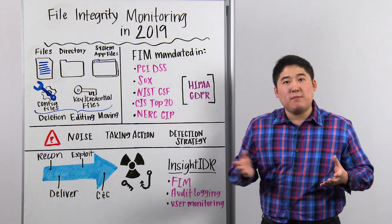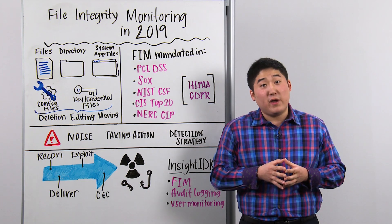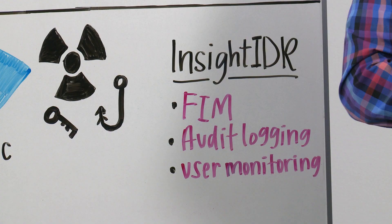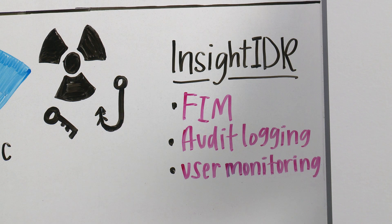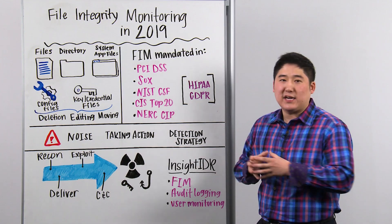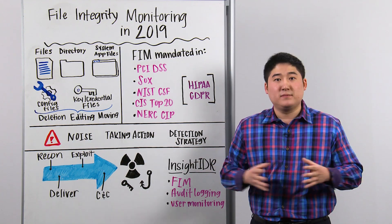At Rapid7, FIM comes included with our cloud SIEM, InsightIDR. You can also meet a number of compliance regulations and have layered detections across the ATT&CK chain.